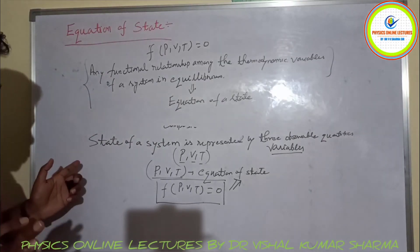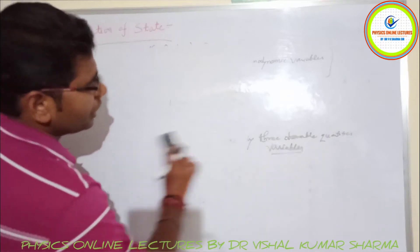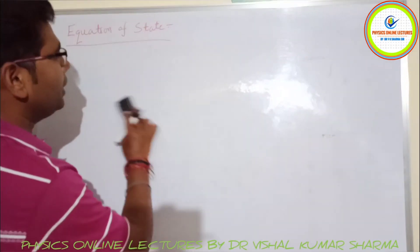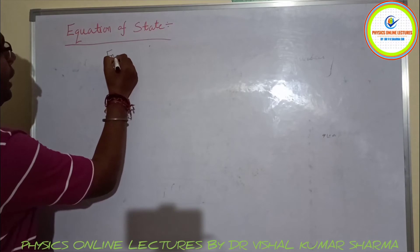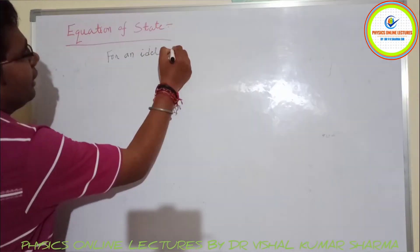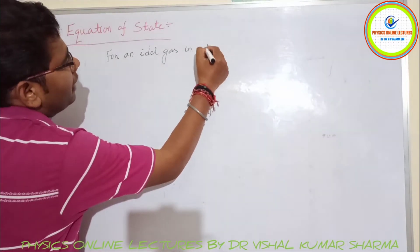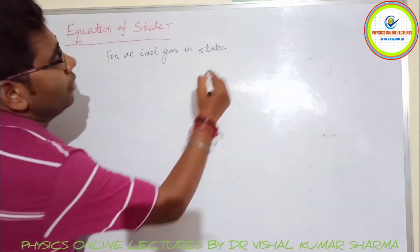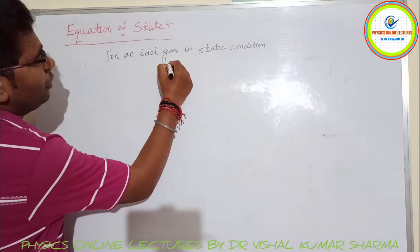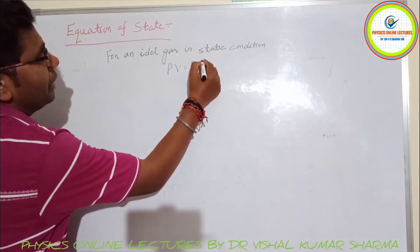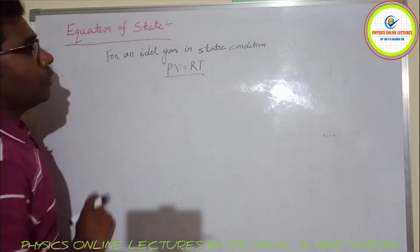Let us now look at a basic example to better understand the equation of state. For an ideal gas in static conditions, the equation of state is represented by PV = RT, which is the basic equation of an ideal gas.